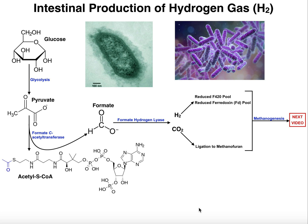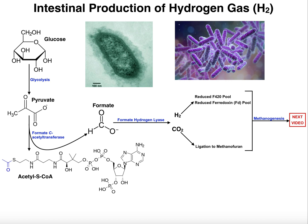In this video we're going to discuss the intestinal production of hydrogen gas, or H2, and this is a process done by bacteria — not by humans, not by eukaryotic cells — but by bacteria in the small and large intestine. This will ultimately lead us to the generation of methane gas, a process called methanogenesis, which also occurs in the intestines.